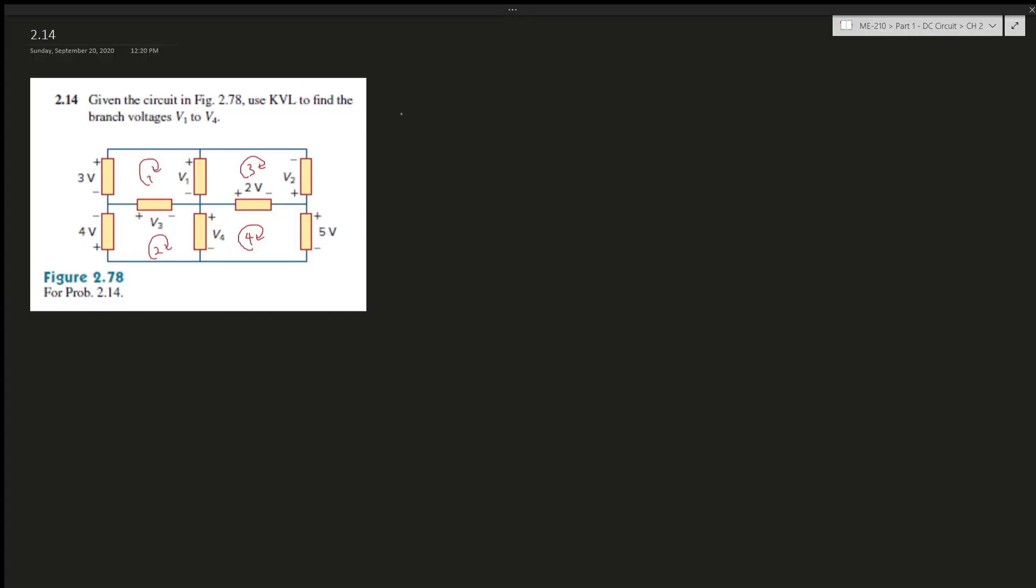Question 2.14 says given the circuit in figure, use Kirchhoff's voltage law to find the branch voltages. So we start with loop A. The law states that within the loop all the voltages should be zero, the sum of the voltages.